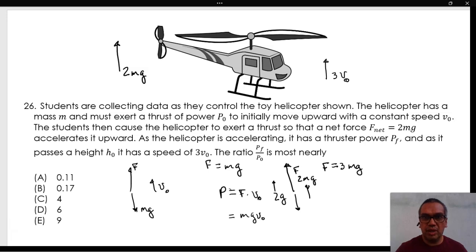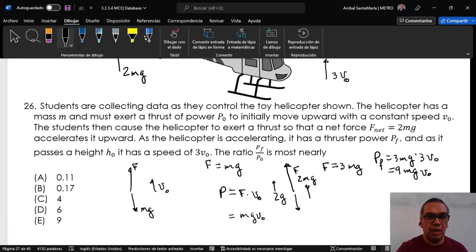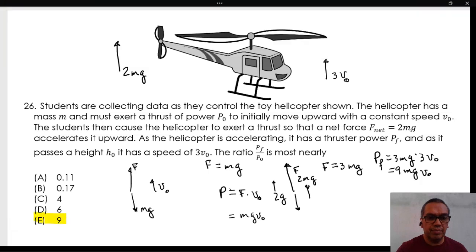When that instantaneous power is equal to force times velocity, then the power pf is equal to 3mg times 3v0, or 9mg v0. Therefore, the ratio pf over p0 is equal to 9mg v0 over mg v0. This is option E.